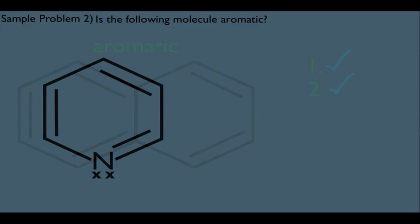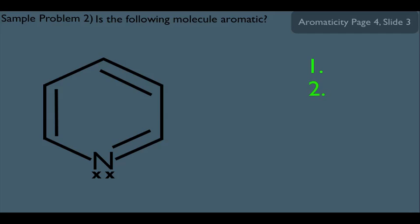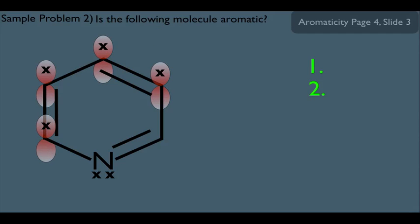Let's look at this second example — a heterocyclic compound. It's heterocyclic because it has an atom other than carbon in the ring; this nitrogen is the heteroatom. Let's see if it's aromatic. Focusing on the pi bonds first: the pi bond on the left would have two p orbitals sideways overlapping. But what about this pi bond involving nitrogen? By definition, if it is a pi bond, you have to have two p orbitals sideways overlapping, which means the orbital on the nitrogen has one electron in it.